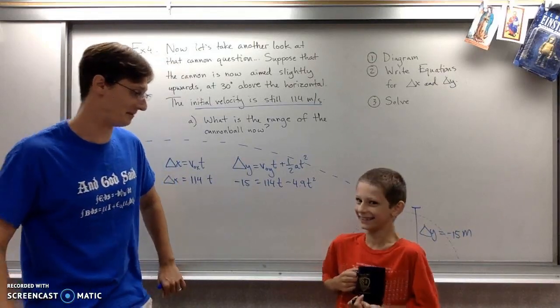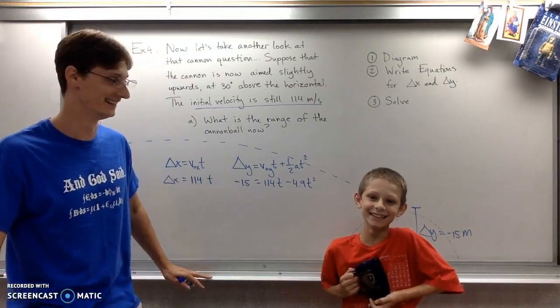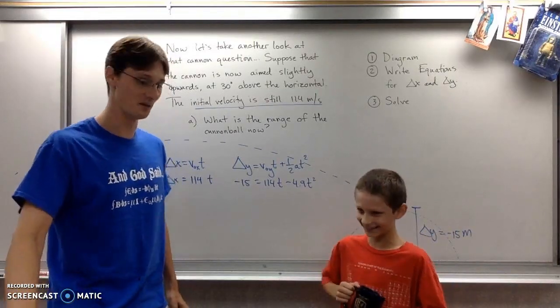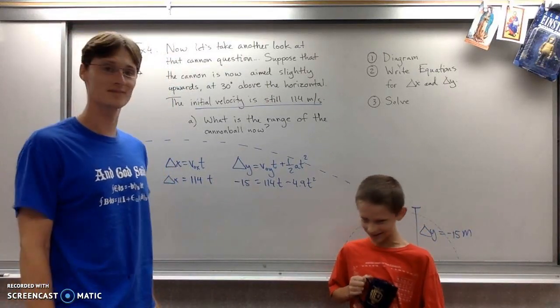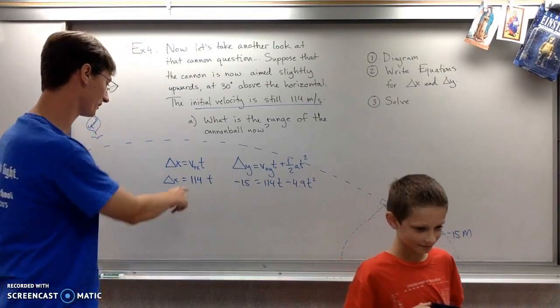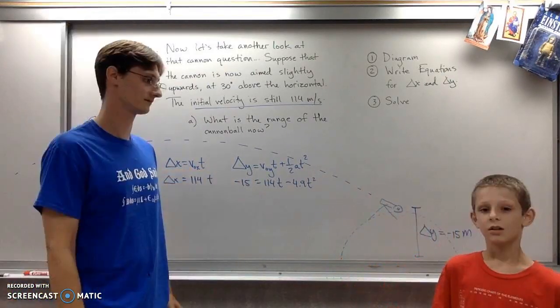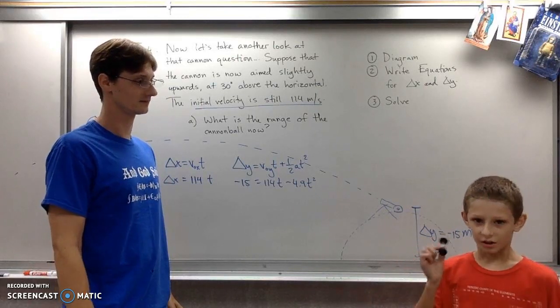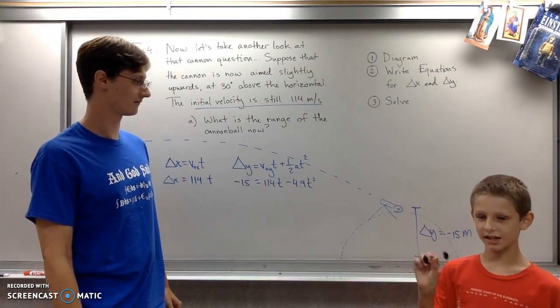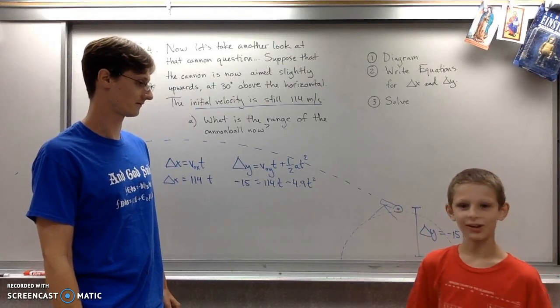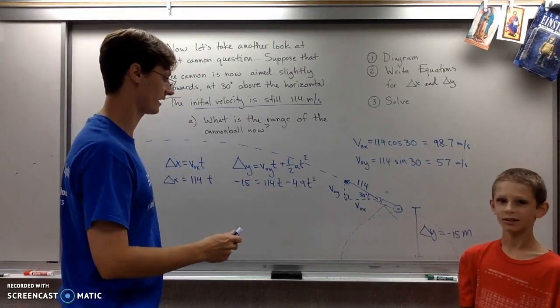Dad, you forgot your components. What do you mean? I put 114 in both equations. Dad, we should envision the velocity as a right triangle. Let me draw it. Oh, that was really fast.